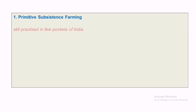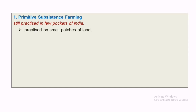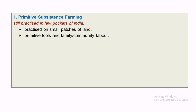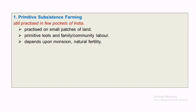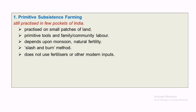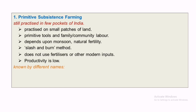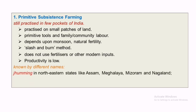First, primitive subsistence farming. It is still practiced in few areas of India. It is practiced on small patches of land. Primitive tools are used and family members are the laborers. It depends upon the monsoon and natural fertility. It is a slash and burn method. It does not utilize fertilizers and other modern inputs.